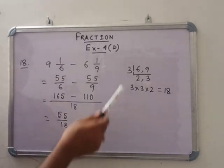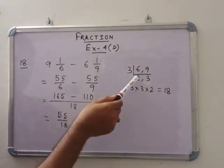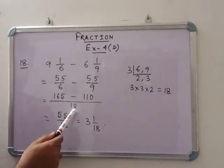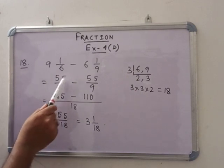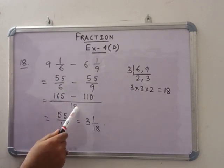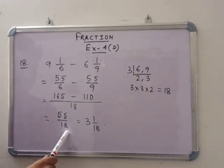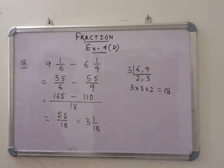So LCM of 6 and 9: 3, then 2, 3. Then 3 into 3 into 2, that is 18. So 18 is the LCM. 18 divided by 6, that means 3. 3 into 55 is 165. And 18 divided by 9 is 2. So 2 into 55 is 110. That means 55 by 18, that means 3 and 1 by 18. That means 3 and 1 by 18 subtracted from 9 and 1 by 6 to get 6 and 1 by 9. So write the answers in every sum. I am not writing, but you all have to write.